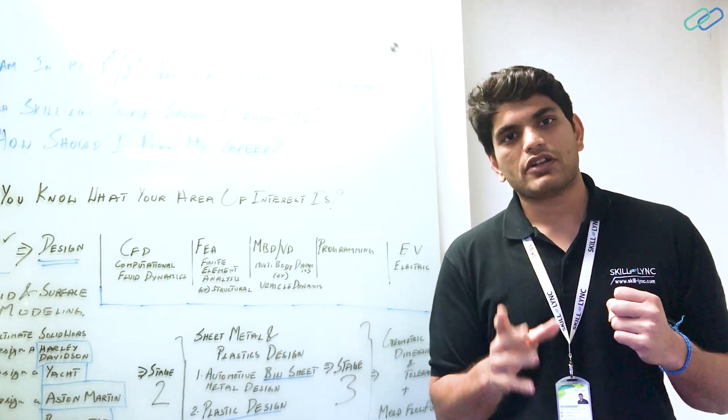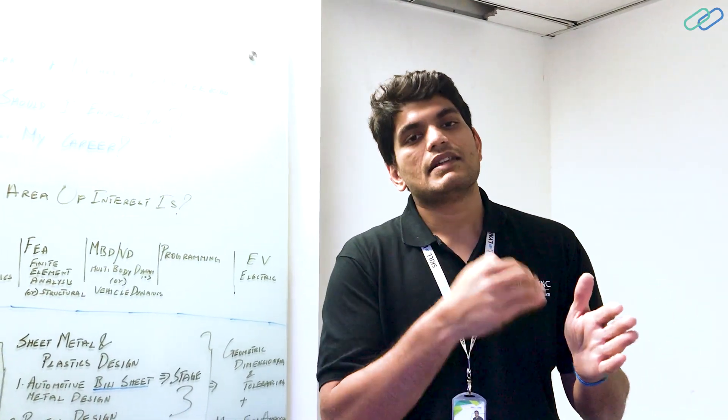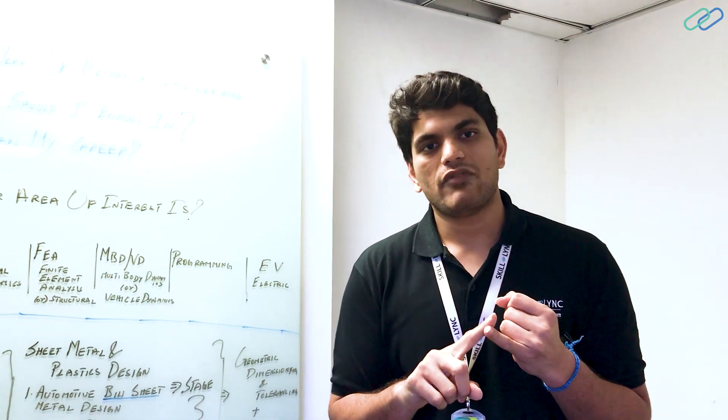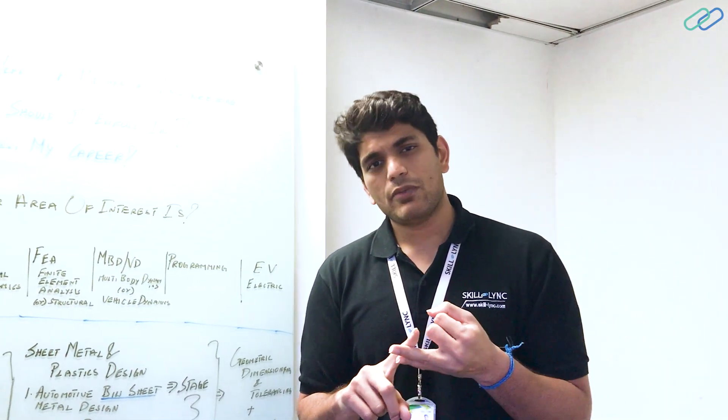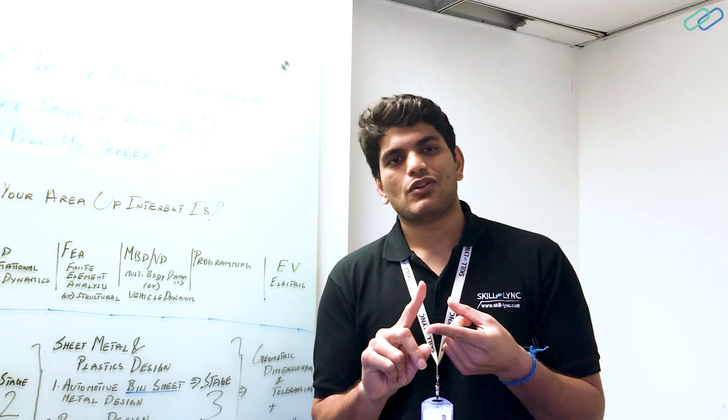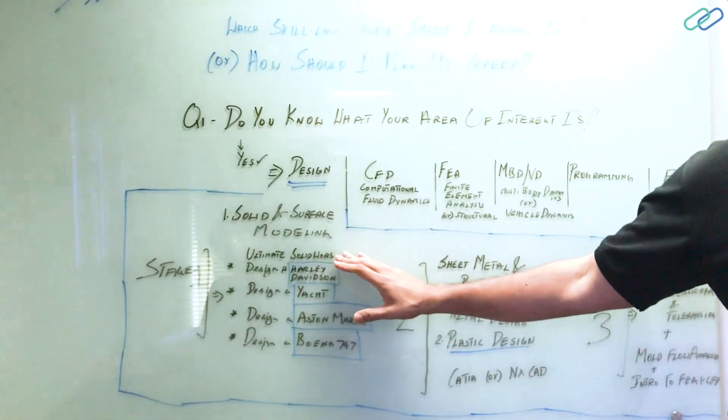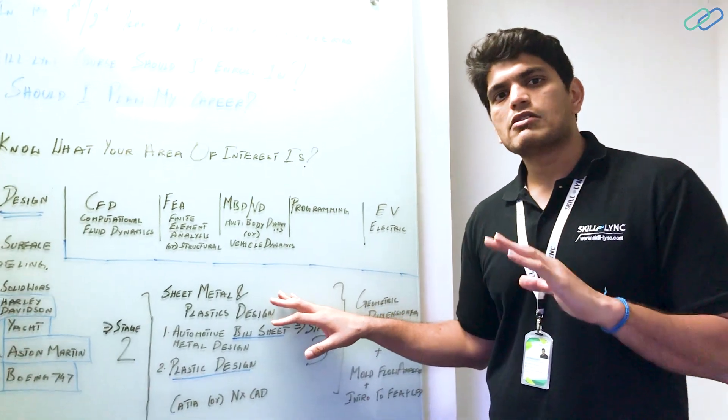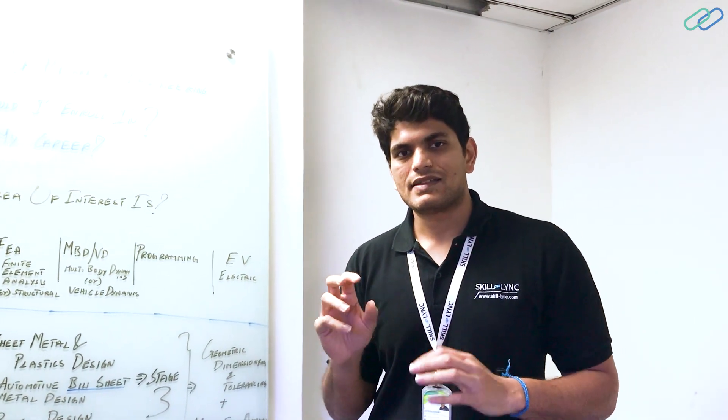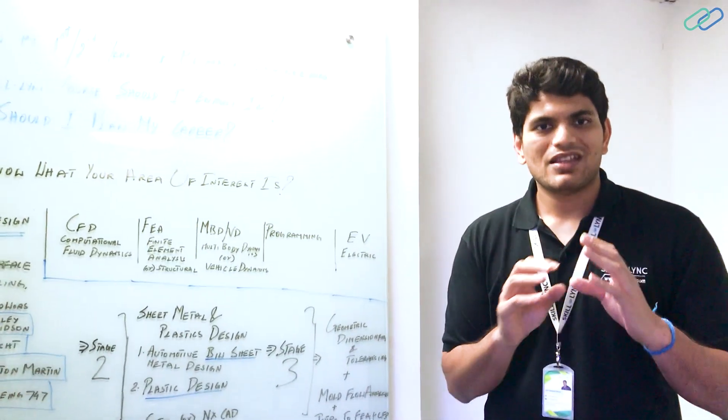In stage two, some of the things that I did not mention is basically the BIW fixture design. There is one aspect where you design the component. There is another aspect where you design the fixture of the component, where the component is manufactured. So that is also very prevalent in industry. BIW fixture design, BIW sheet metal design, plastics, and then there is mold design. Mold design is also very prevalent. So these are the four things that you can take a look into in stage two. To summarize, stage one is solid modeling and surface modeling. Stage two is sheet metal plastics. In this, also look into fixture design and mold design. Stage three is your mold flow analysis, geometric dimensioning and a little bit of analysis. So if you are a fresh engineer who wants to get into design engineering, this is the pathway that you need to follow.